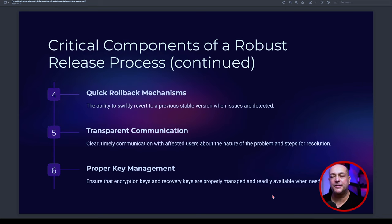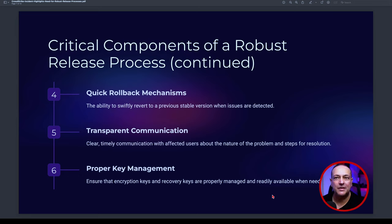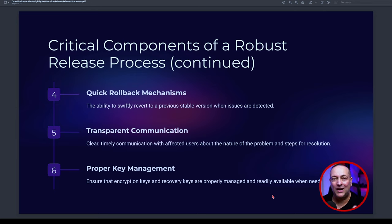The fourth component is quick rollback mechanisms — the ability to swiftly revert to a previous stable version when an issue is detected. That's easier with a cloud solution where you control the virtual machine. In this scenario, though, there is no rollback mechanism that can be quick or remote, because the update rendered every single one of those systems unable to boot up — completely disabled.